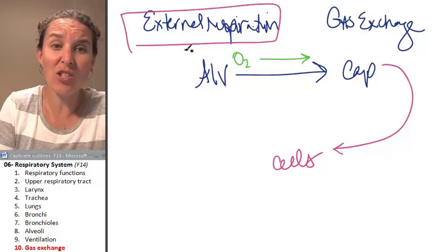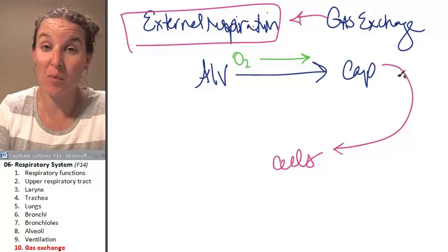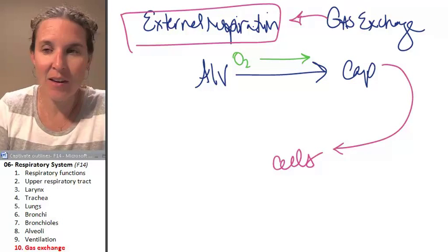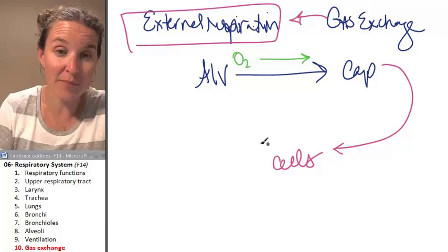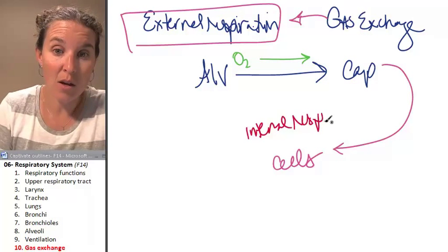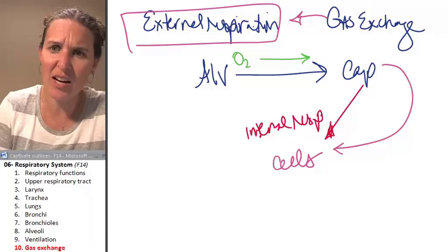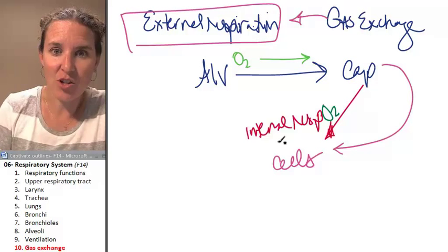And while external respiration is the form of gas exchange that we were just talking about that relates to the lungs, we have to also have internal respiration. And internal respiration happens when the capillary exchanges with the cells. So the oxygen actually travels into the cell. That's oxygen. That's internal.